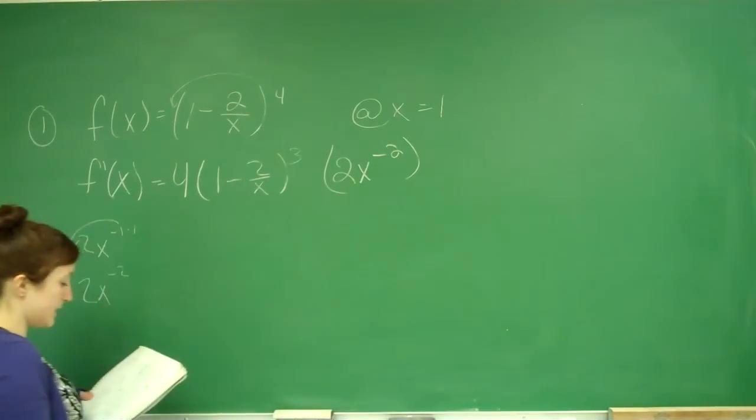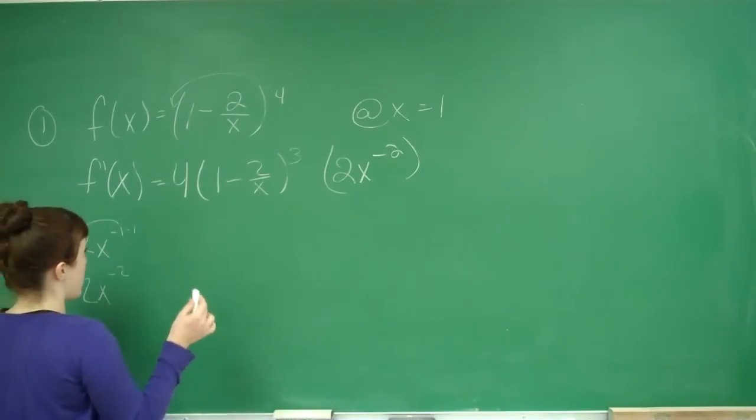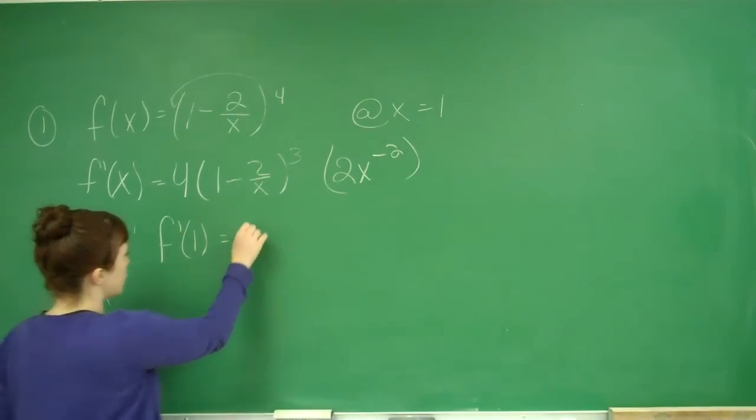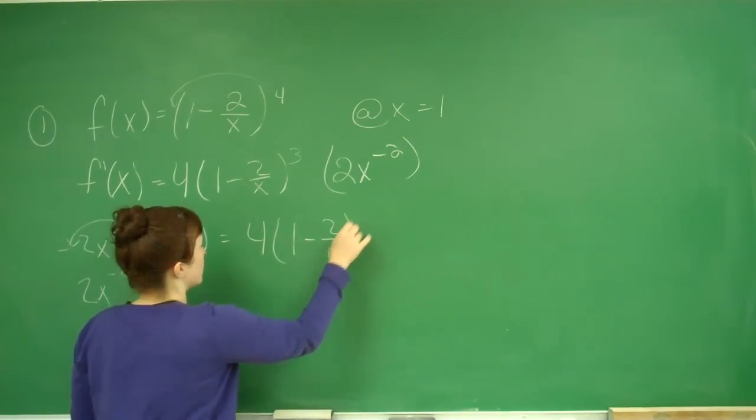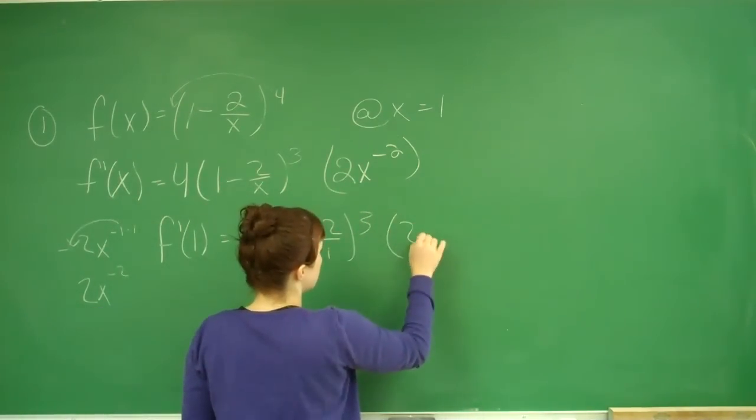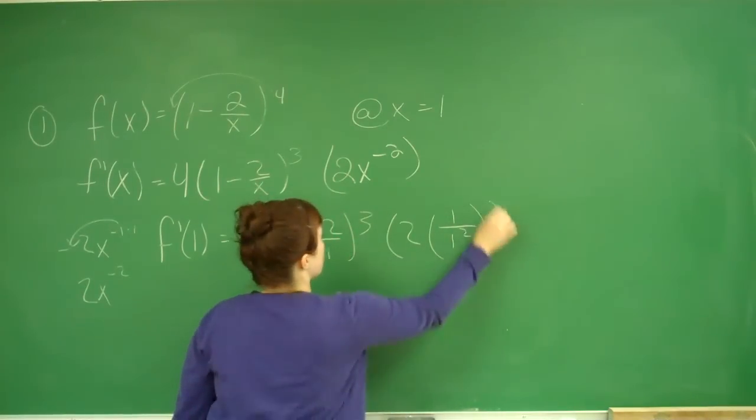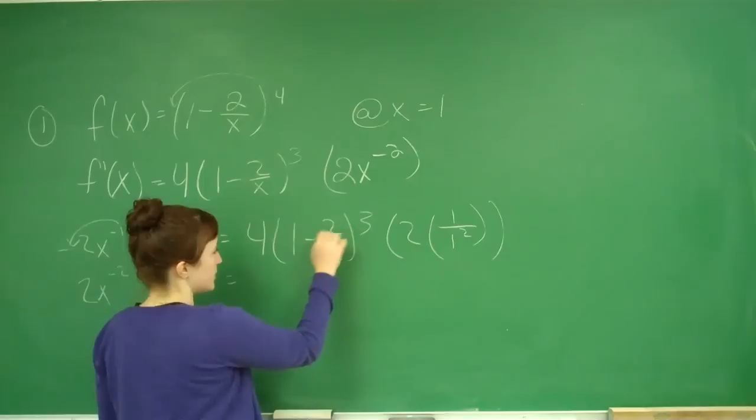Now we want to find the derivative at x = 1. So f'(1) = 4(1 - 2/1)^3 times 2(1/1)^2. To solve this, we simplify - this becomes 2.